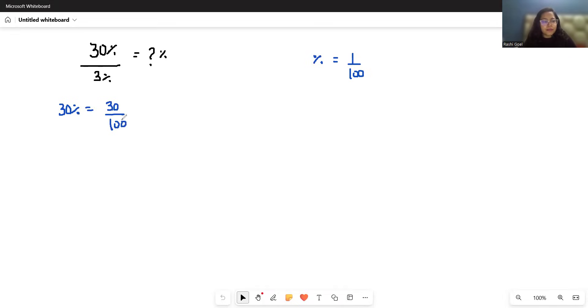Similarly 3% I can write 3 by 100. Now let's rewrite: 30 by 100 divided by 3 by 100.